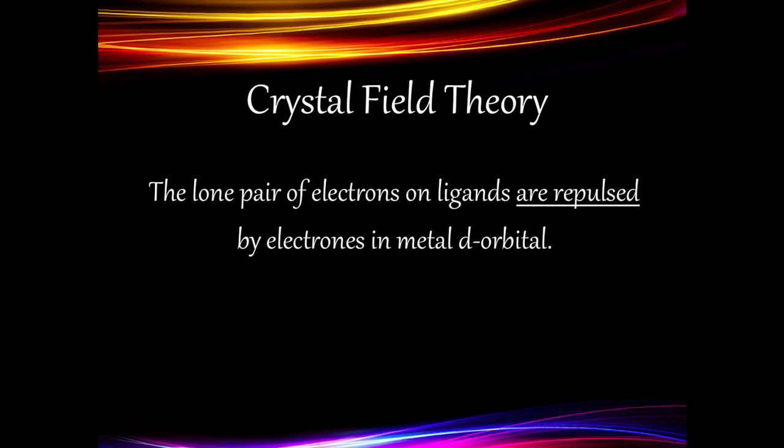Now we will look at what exactly happens as the ligand approaches the metal ion. Apart from the positive-negative attraction between the metal ion and the ligand, there is also a negative-negative repulsion taking place. This comes from the lone pair of electrons in the ligand and the electrons already present in the metal's d-orbitals. This repulsion will cause d-orbital splitting.